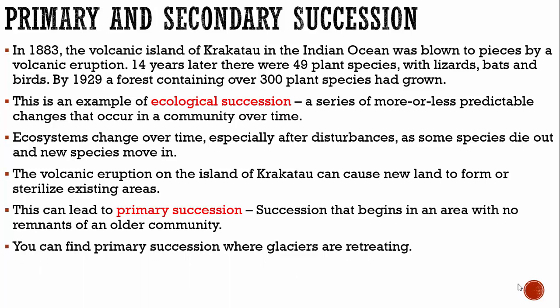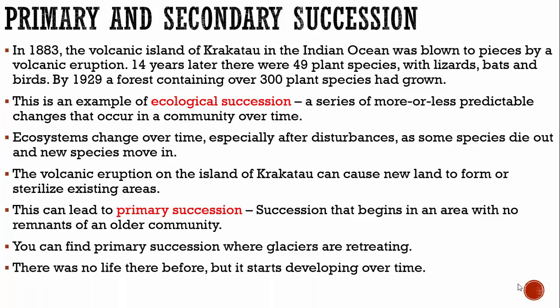You can find primary succession where glaciers are retreating — the ice is melting, exposing bare rock where new life can start to form. There was no life there before, but it starts developing over time.